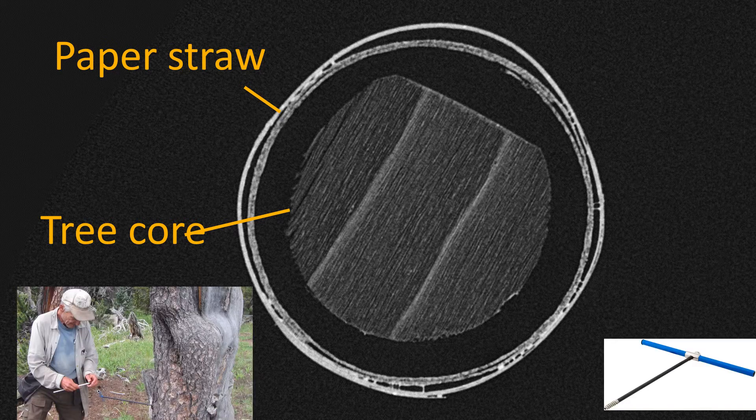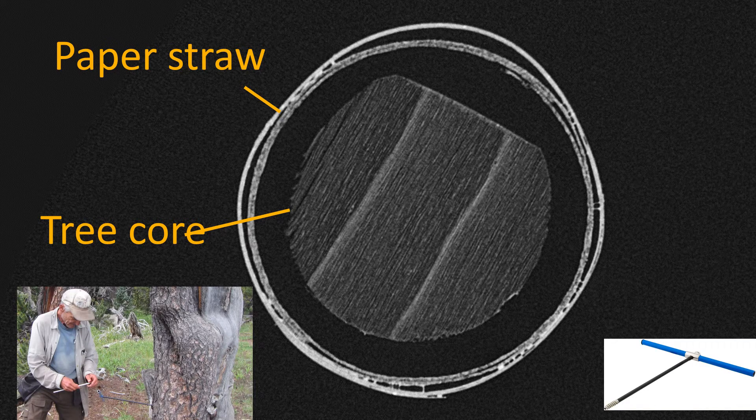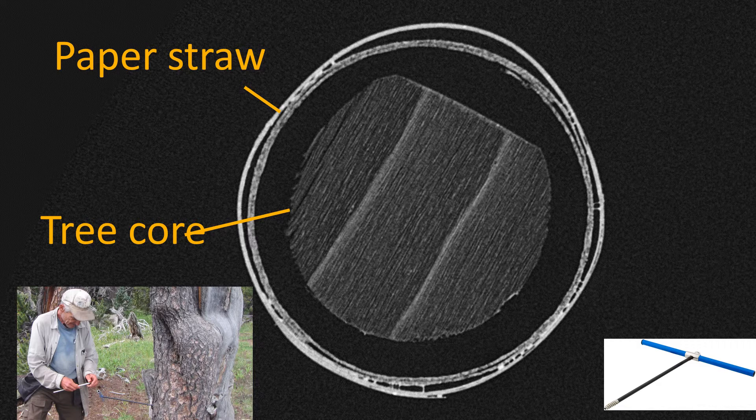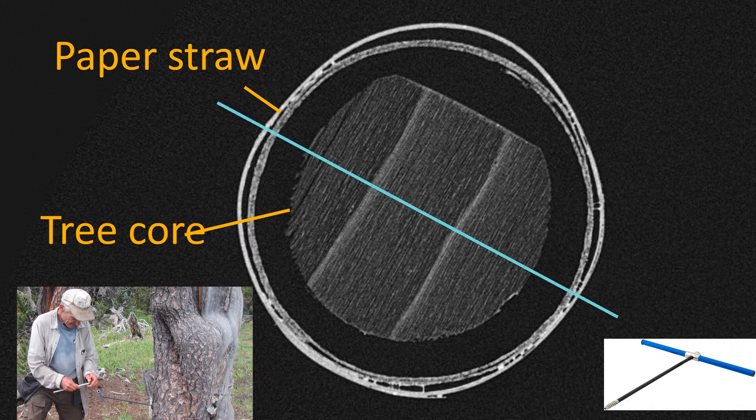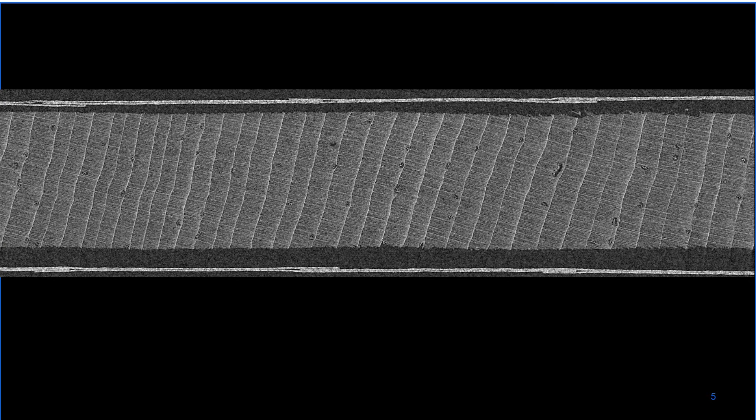Now if we slice further through it, that makes more sense, right? This is a cross-section of a tree core.